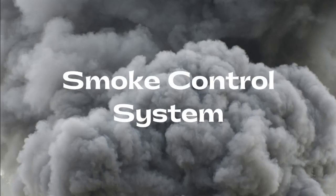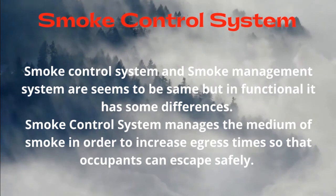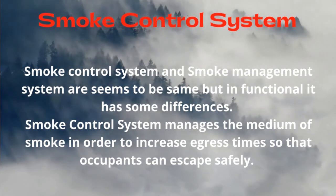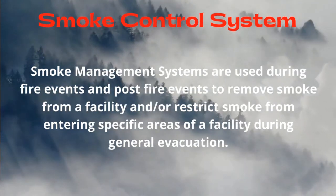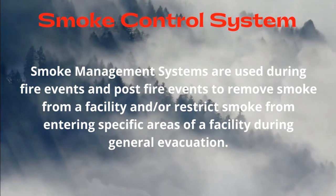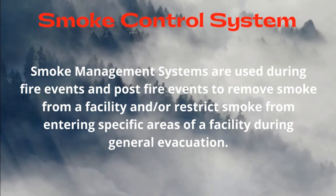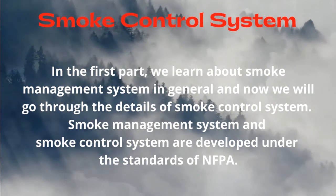Smoke control system explained. Smoke control system and smoke management system seem to be the same but functionally have some differences. A smoke control system manages the movement of smoke in order to increase egress time so that occupants can escape safely. Smoke management systems are used during fire events and post-fire events to remove smoke from a facility and restrict smoke from entering specific areas during general evacuation. Both systems are developed under the standards of NFPA.